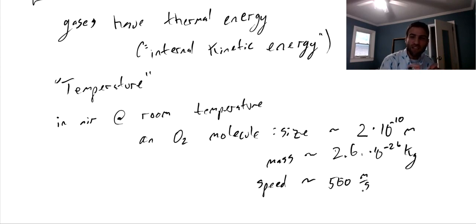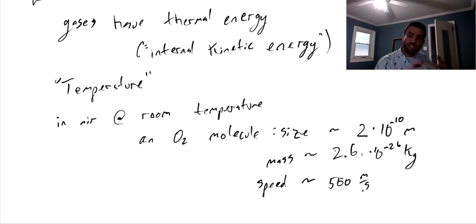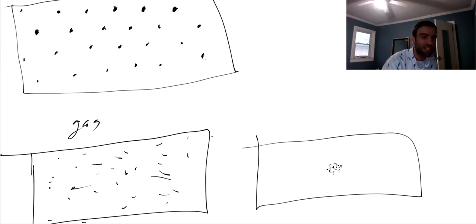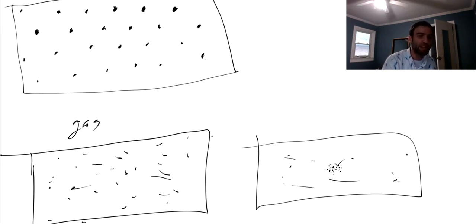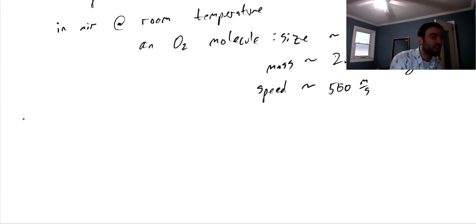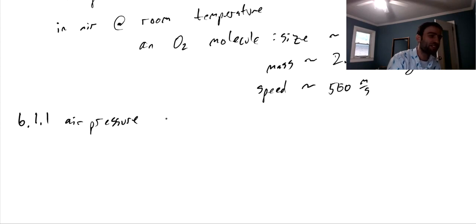Because gas molecules collide and bounce so frequently, they don't spend a lot of time consistently moving in the same direction before bouncing off something else. This kind of random, collision-filled existence tends to spread gas particles out as far as possible from each other until they fill up an available container. If you started with a cluster of gas particles in a tiny container and then released them, they'd very quickly spread out and fill the available space. So let's think about this process — about air pressure and the ideal gas law.